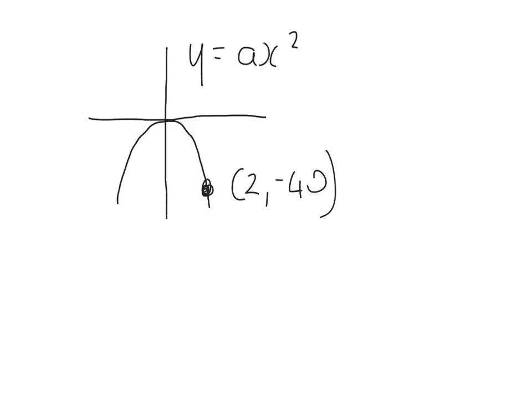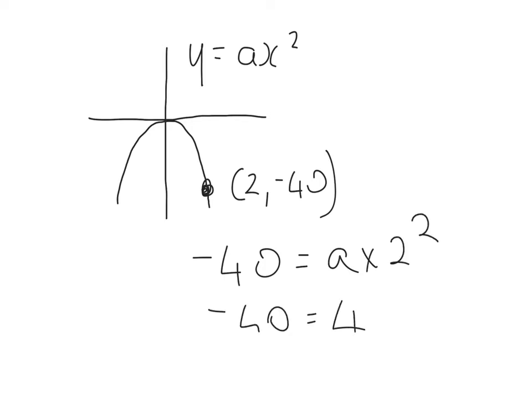One more of this type: y equals ax squared; find a. When x equals 2, y equals -40. 2 squared is 4, so 4a equals -40, a equals -40 over 4, and that's -10.